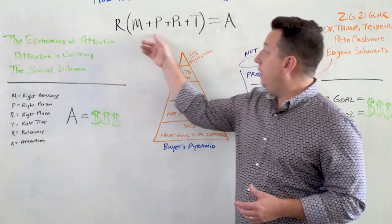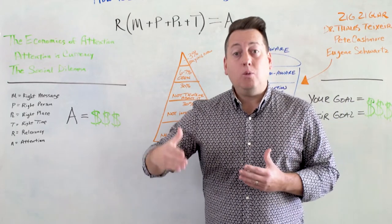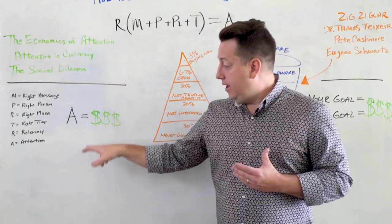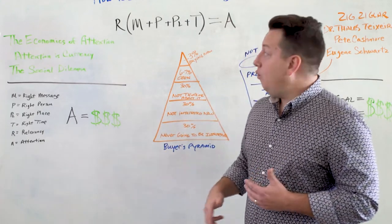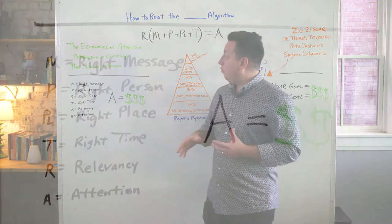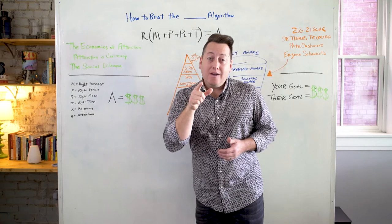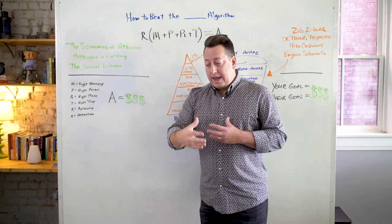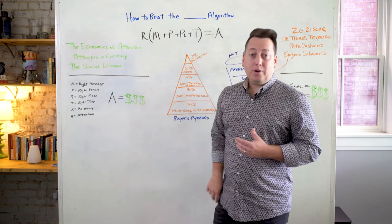So when we think about the formula, the formula for creating relevant content that will capture and keep attention, thereby creating revenue for you and for the networks which you're on. When we think about that formula, we have to remember that timing is crucial. And so let's go through it one more time. Relevancy equals right message plus right person plus right place plus right time. And when you have all that right, you have content that captures and keeps attention. Attention that drives revenue.